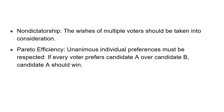The first condition is non-dictatorship, which means that the wishes of multiple voters should be taken into consideration — otherwise, if it is a dictatorship, this is not happening. Next, we have Pareto efficiency, which means that unanimous individual preferences must be respected. If every voter prefers candidate A over B, candidate A should win because everyone is preferring candidate A.